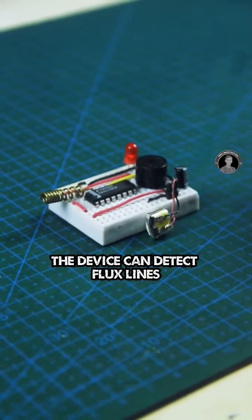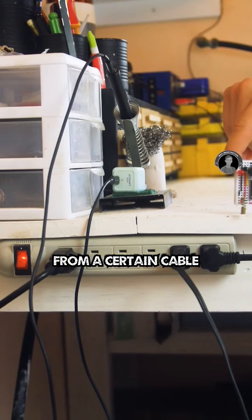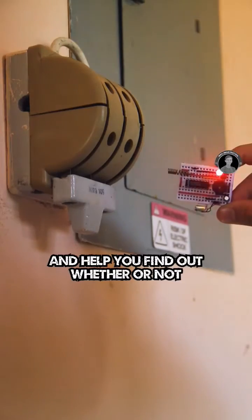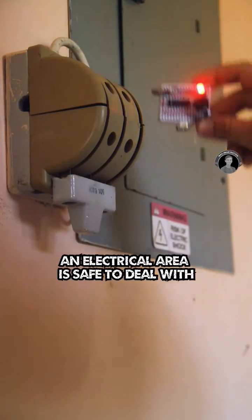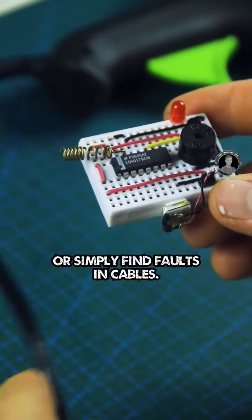Once powered, the device can detect flux lines in an electric field from a certain cable up to 15 centimeters and help you find out whether or not an electrical area is safe to deal with or simply find faults and cables.